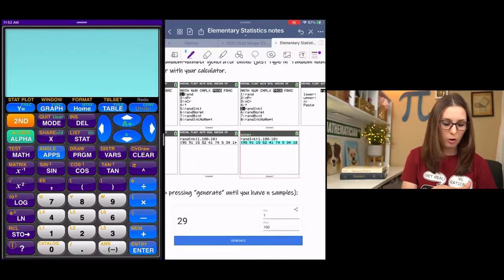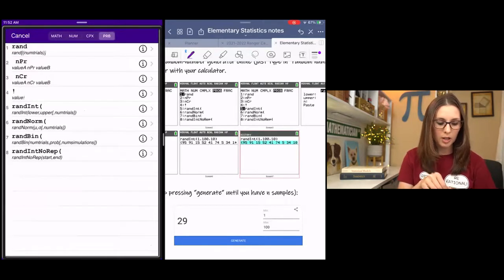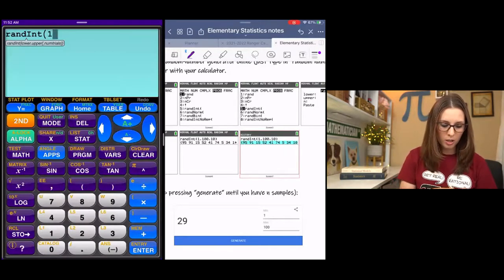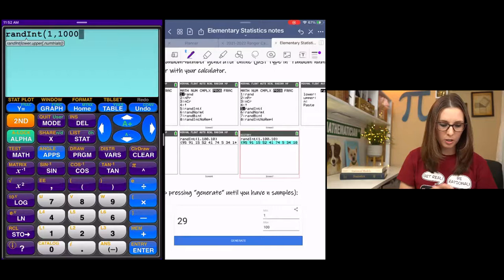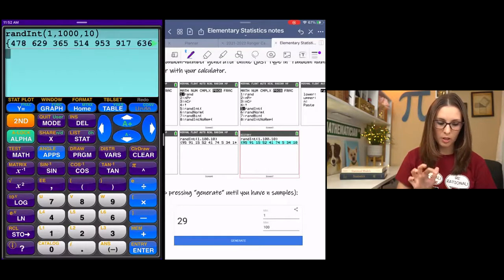Long story short, you'll go to math over on the left. Go to probability up at the top. Go over to probability. Number five says random integer. We're going to go from one to a thousand. And then I'm going to tell it with a comma, how many numbers I want. Close the parentheses, enter.